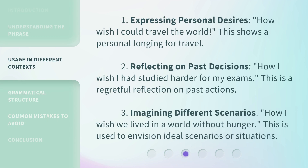There are three key uses. First, expressing personal desires: 'How I wish I could travel the world' — this shows a personal longing for travel. Second, reflecting on past decisions: 'How I wish I had studied harder for my exams' — a regretful reflection on past actions. Third, imagining different scenarios: 'How I wish we lived in a world without hunger' — used to envision ideal situations.